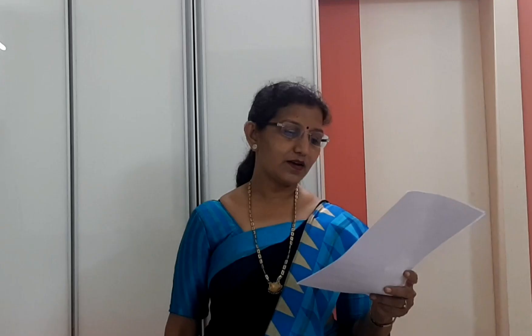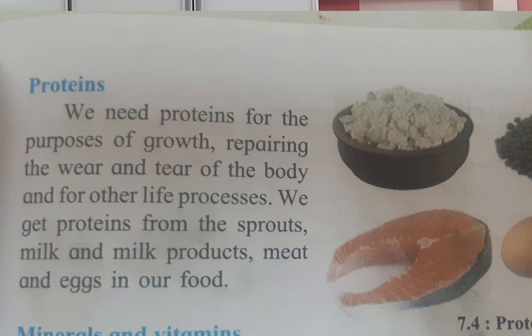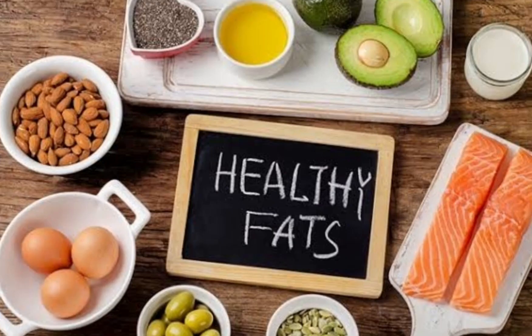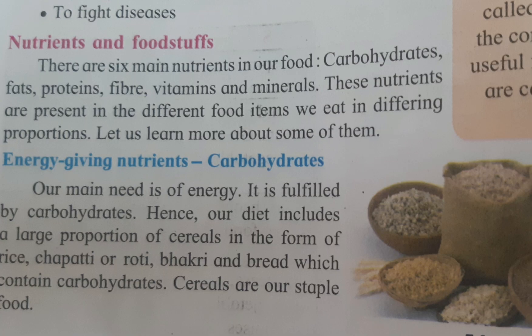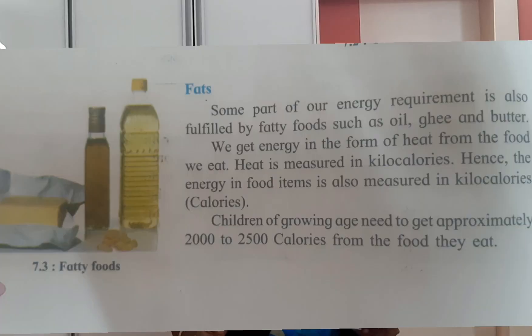Now question number five: complete the following chart. There is a chart of energy-giving nutrients. You can see in the picture — carbohydrates, fats, and proteins. For example, the sources of proteins given are milk, meat, and eggs. We get carbohydrates from rice, chapati, bhakri, and bread. We get fats from oil, ghee, butter, etc. In this way we have completed test 2 from our bridge course.